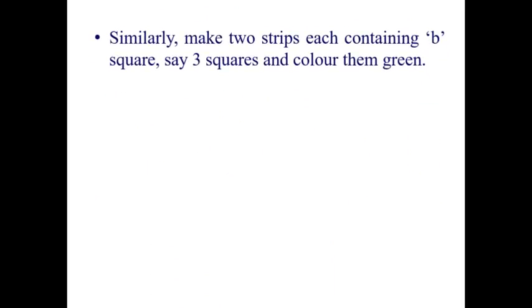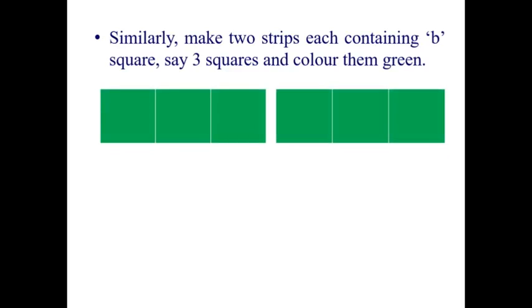Then, similarly, make two strips containing B squares. Say, 3 squares. Here, B is equal to 3, and color them green. So, here, you have to take two strips, each containing 3 squares. So, these are two strips, each contains 3 squares, and they are colored as green.